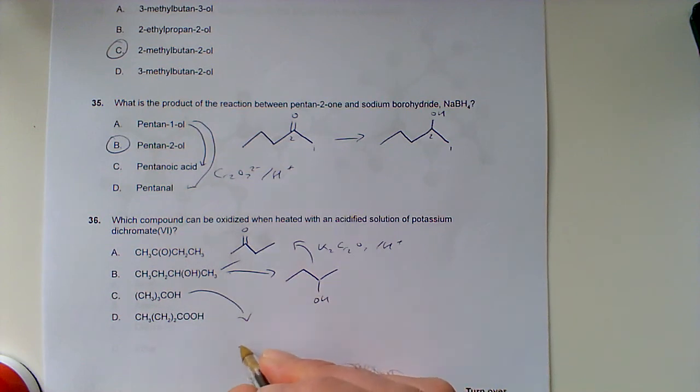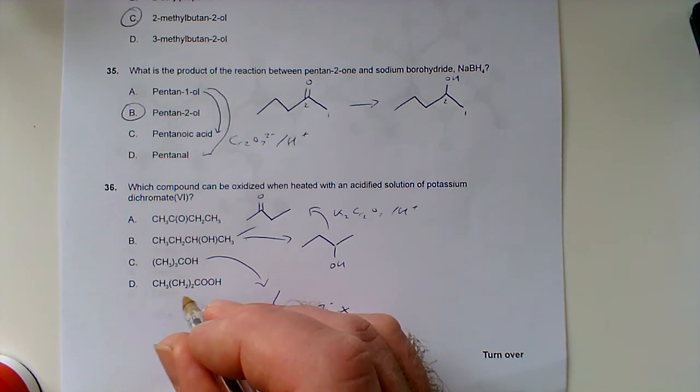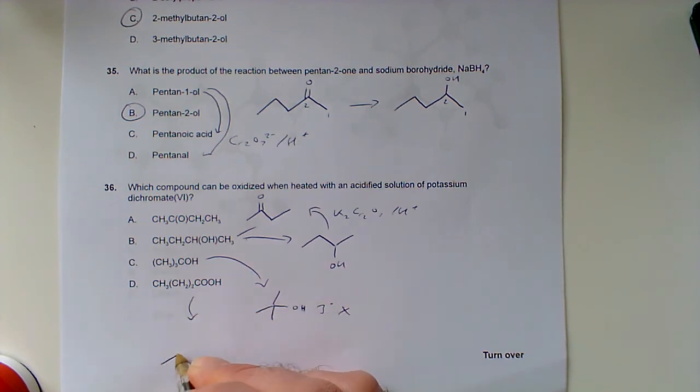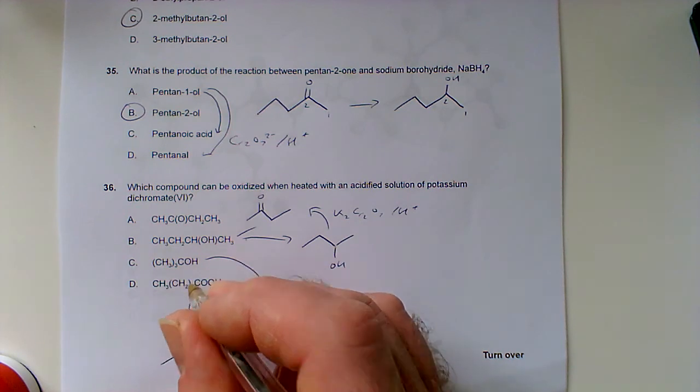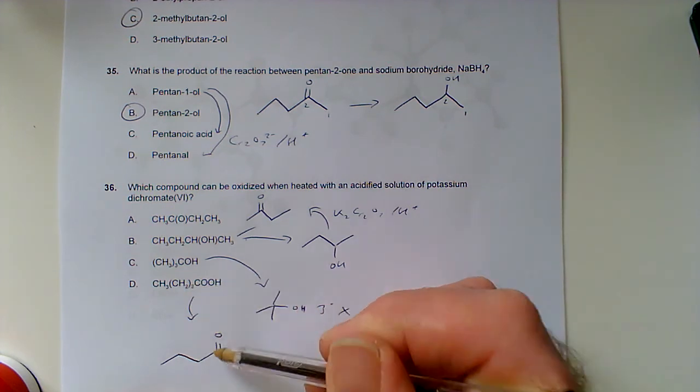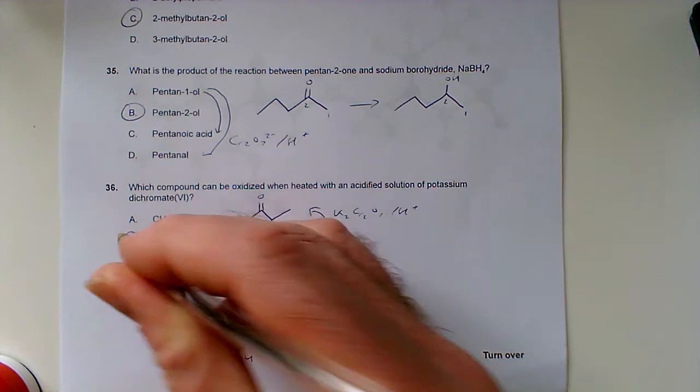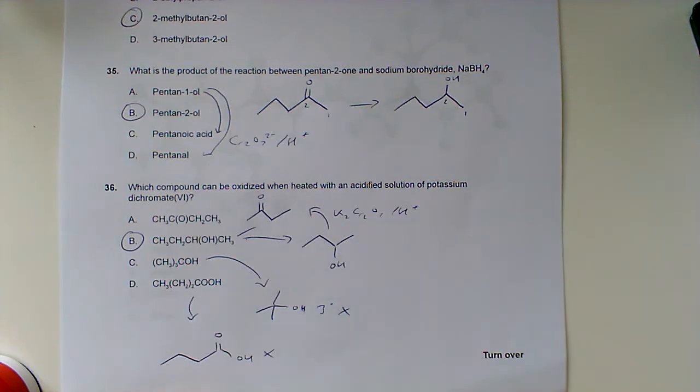Let's rule these out. This is a tertiary alcohol—you can't oxidize those because there's no hydrogen to remove on this carbon. This is a carboxylic acid—that's already fully oxidized, it can't oxidize any further. So B is our right answer: the secondary alcohol will oxidize to a ketone.